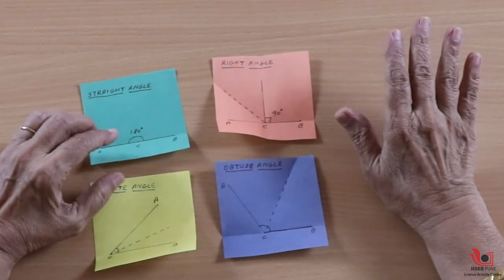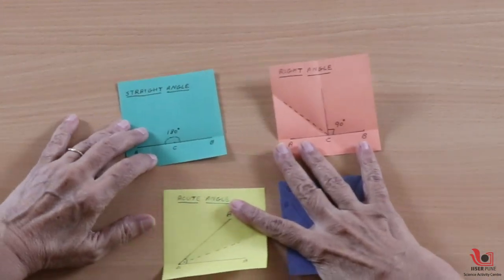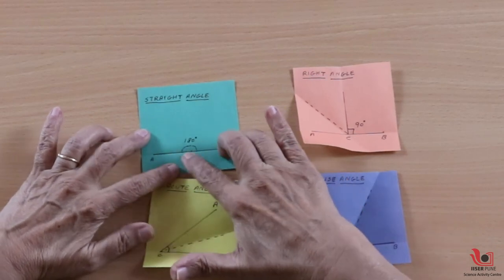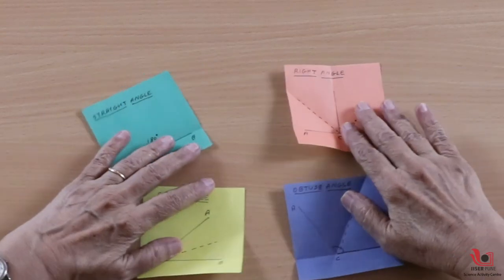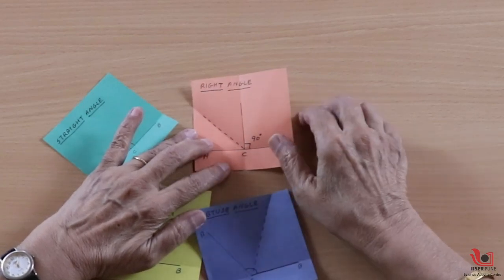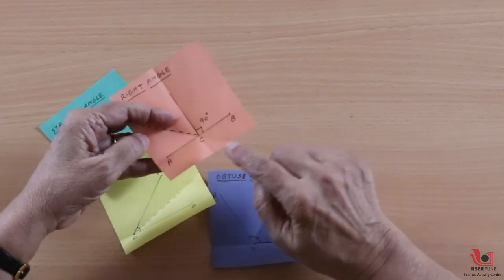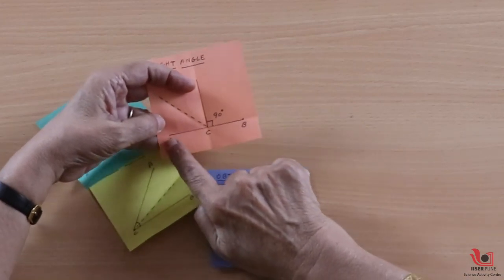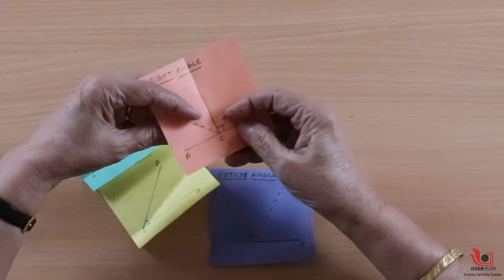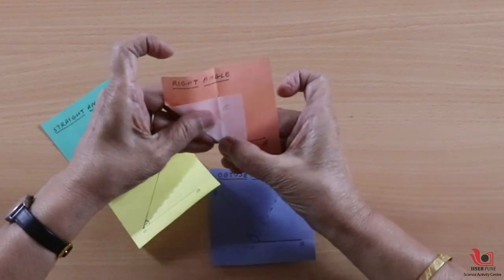This is the straight angle you must have studied in school. This is a right angle, and you can fold it by simply folding this line with this line, like this.